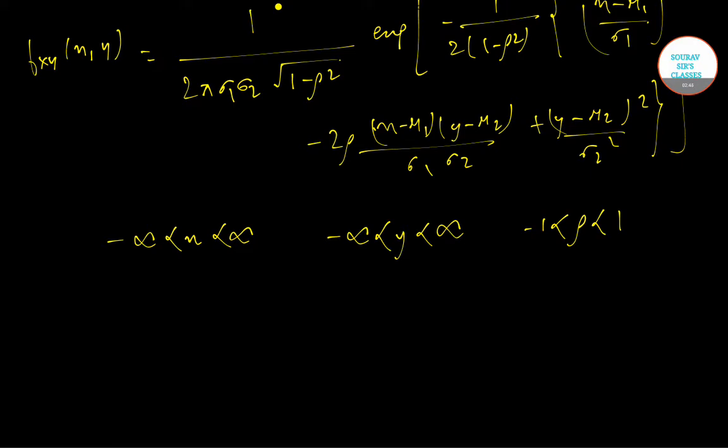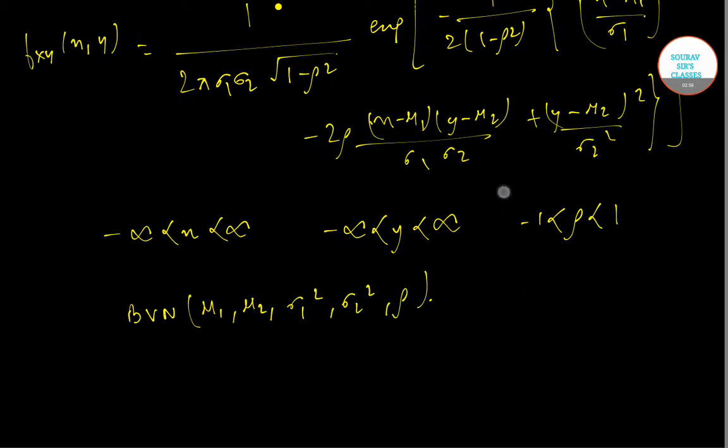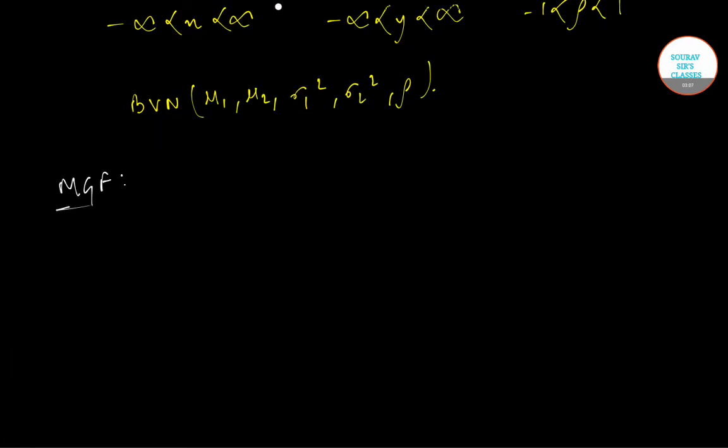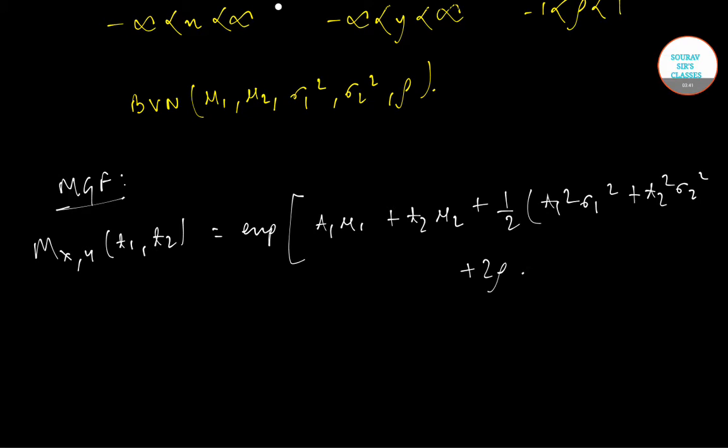This distribution is generally represented as BVN(μ_1, μ_2, σ_1², σ_2², ρ). The moment generating function is given as M_XY(t_1, t_2) = exp[t_1 μ_1 + t_2 μ_2 + 1/2(t_1² σ_1² + t_2² σ_2² + 2ρ t_1 t_2 σ_1 σ_2)].